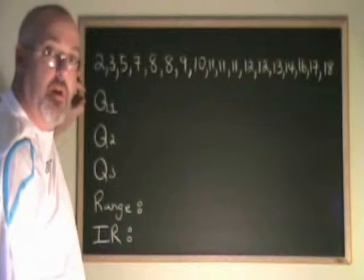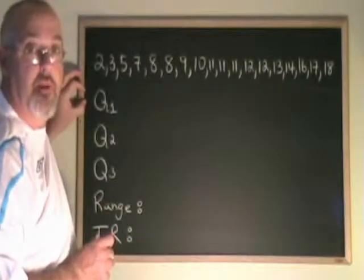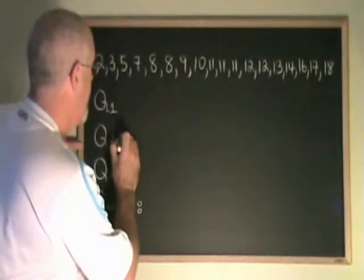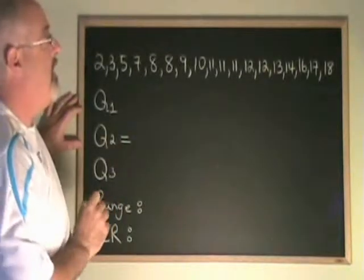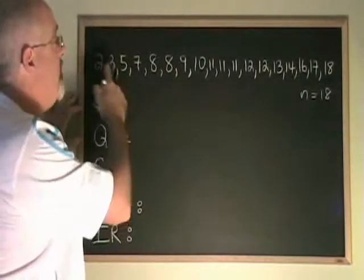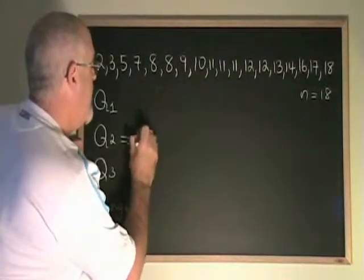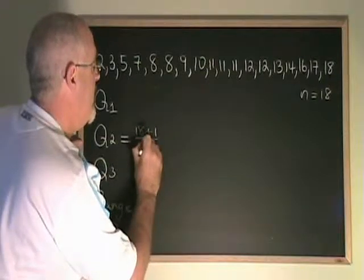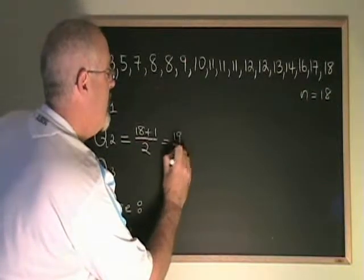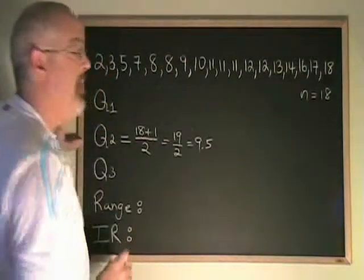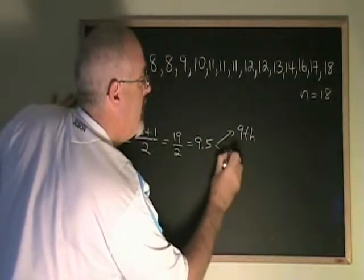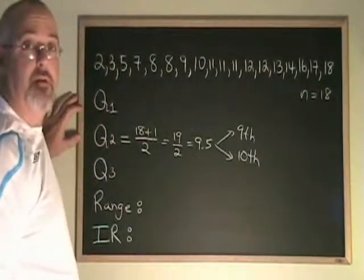In order to find interquartile range, you need to know your Q1, Q2, and Q3 for your data. Q2 is the median. We take the n number of our data, which in this case is 18. I have 18 numbers here. And we put 18 plus 1 over 2. That's the n plus 1 over 2 formula equals 19 over 2 equals 9.5. 9.5 means the 9th and the 10th data values. Let's find them.